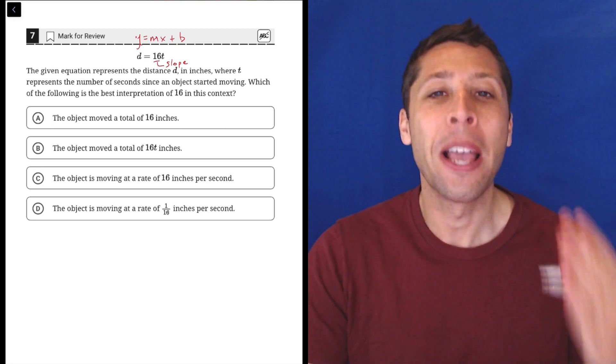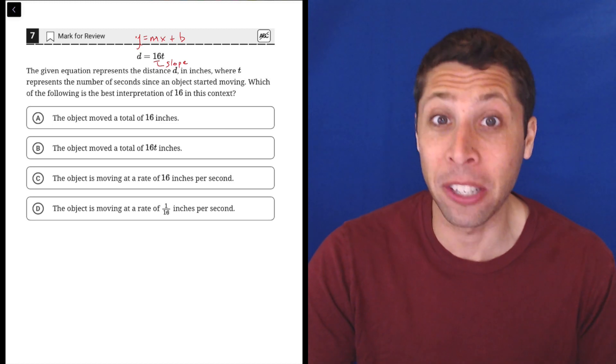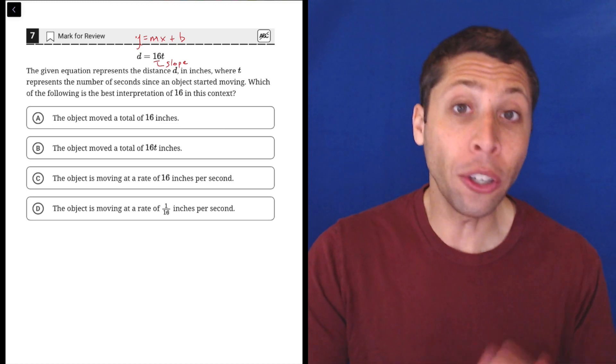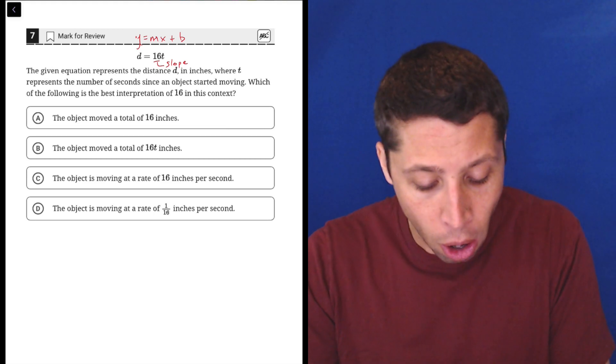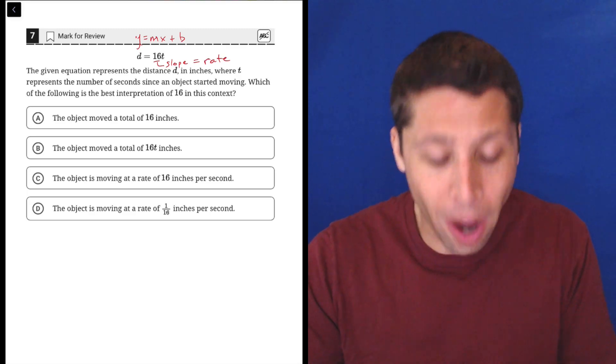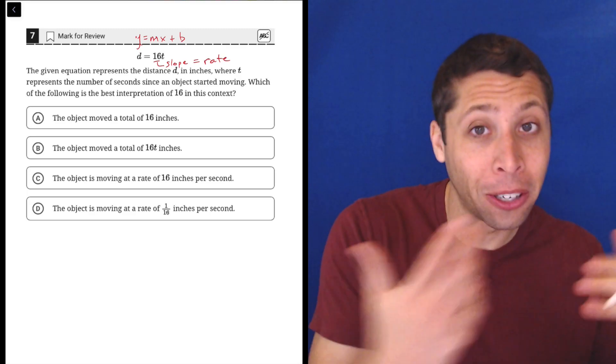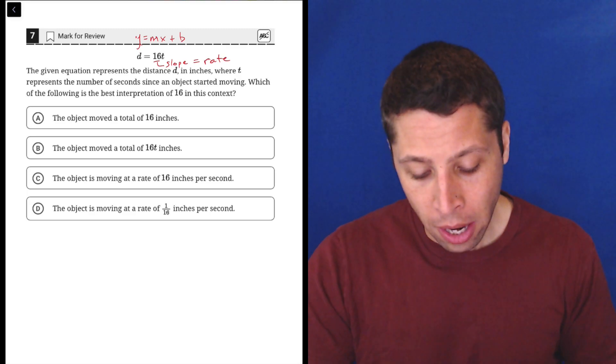Regardless, we're looking for an answer choice that represents a slope, which when we have a story often sounds like a rate. So we want to have something per something, that's usually how this goes.